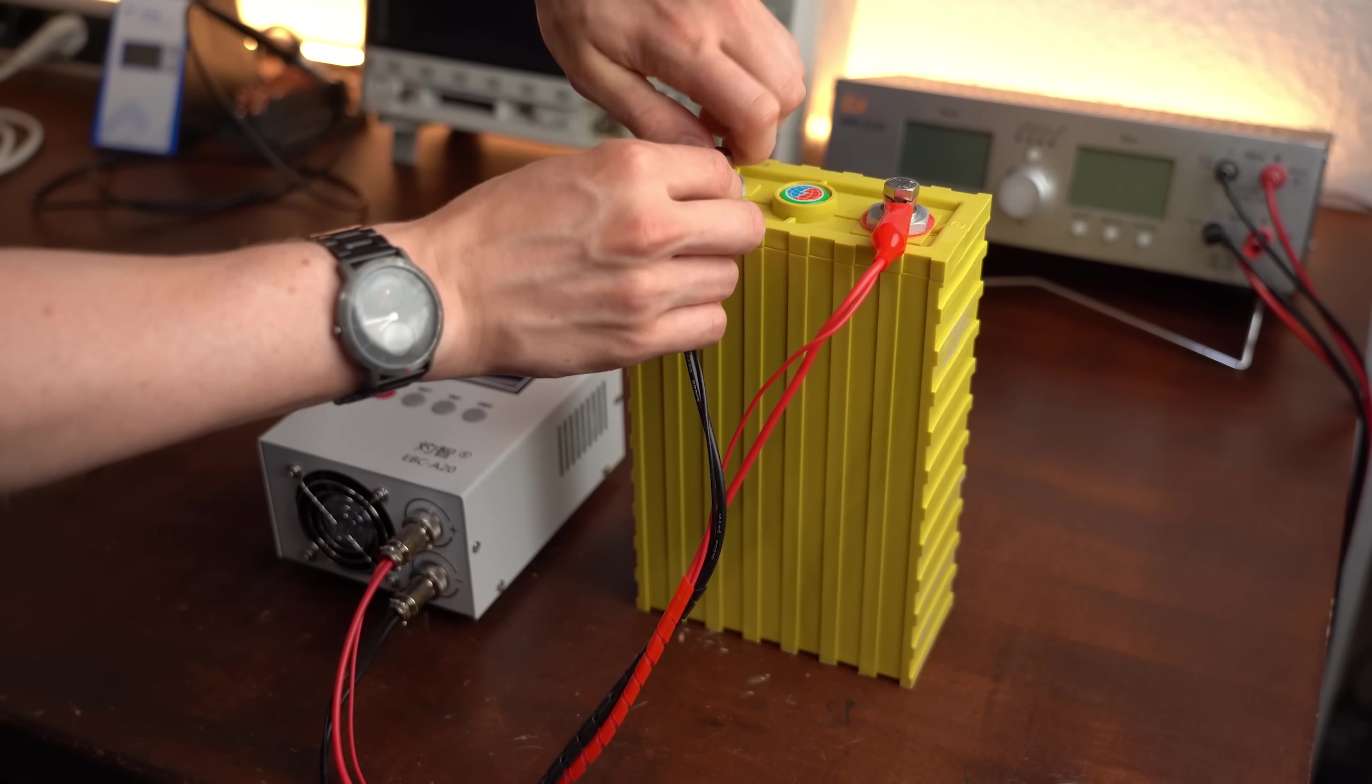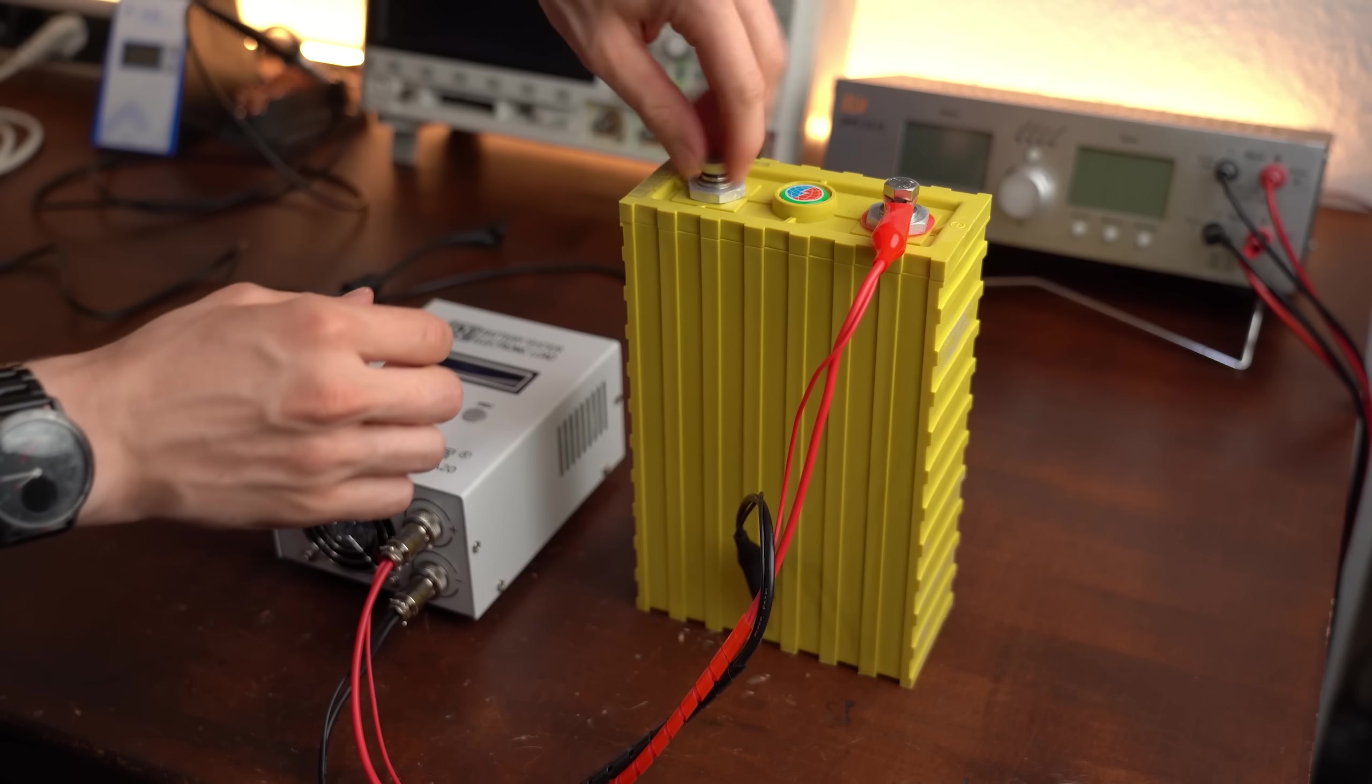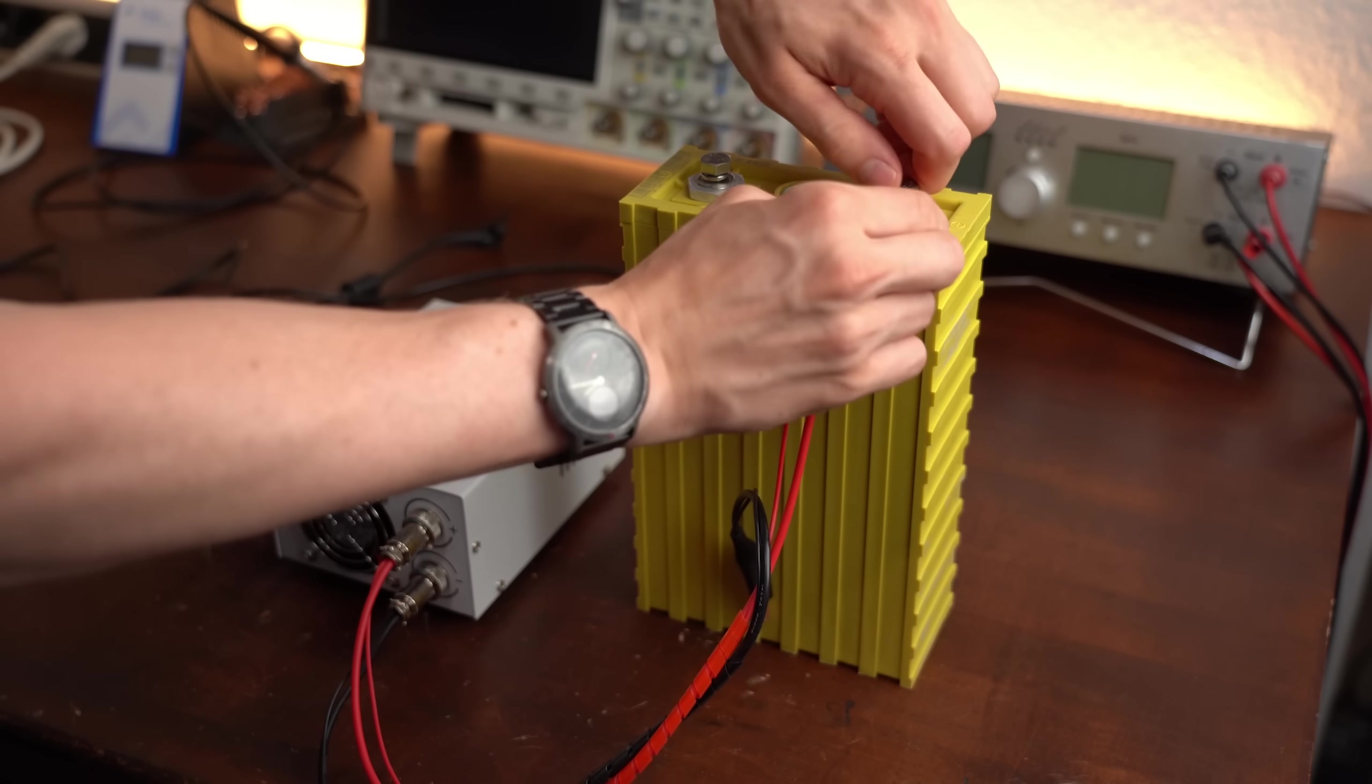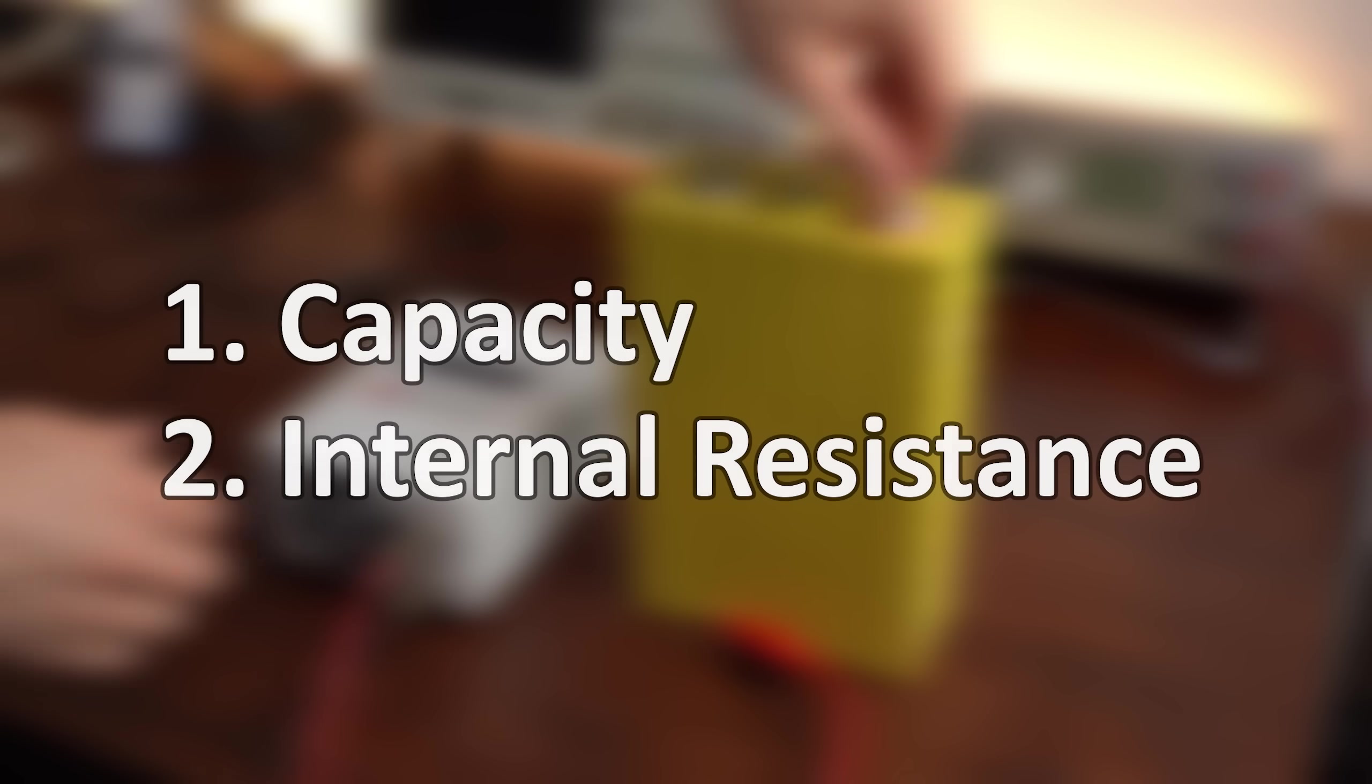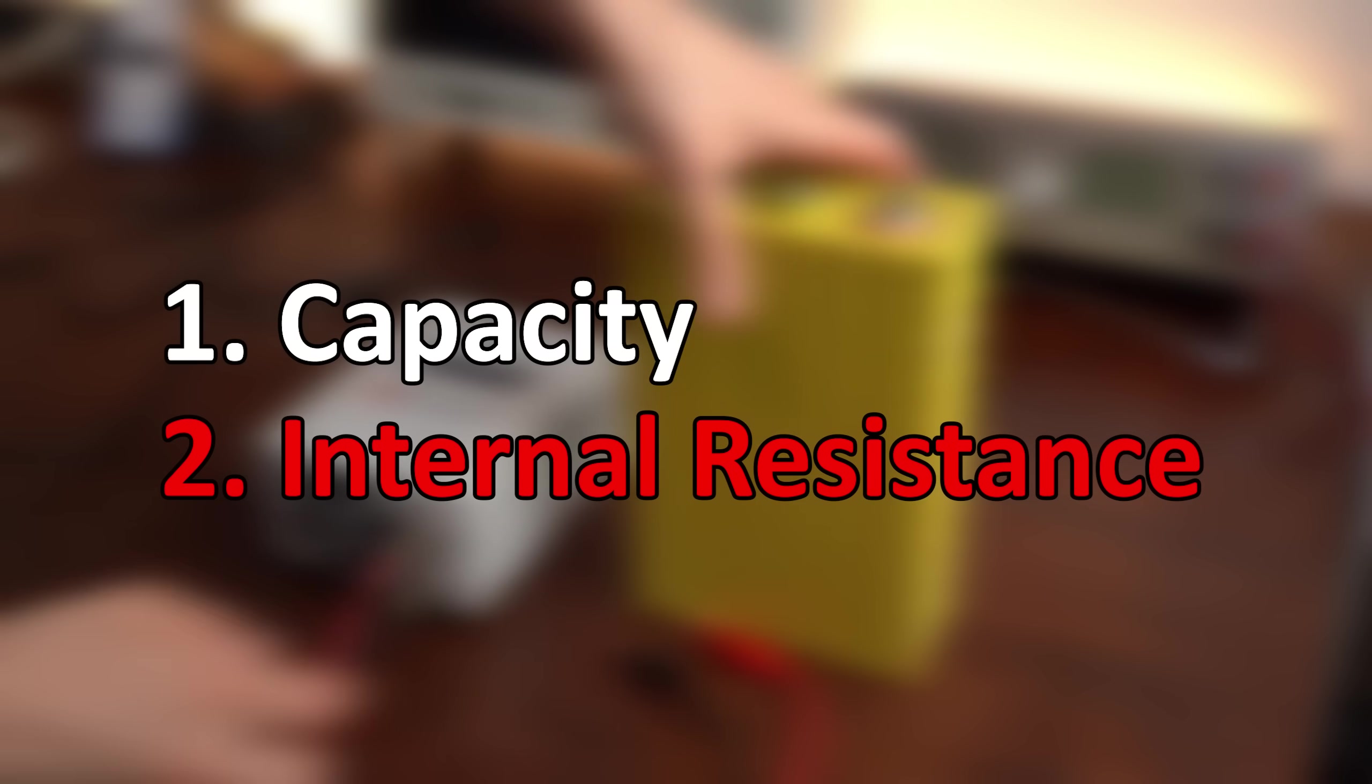So is there maybe another way to skip this long capacity measurement and still find out whether a battery cell is still usable? And of course there is with method 2 aka the internal resistance.